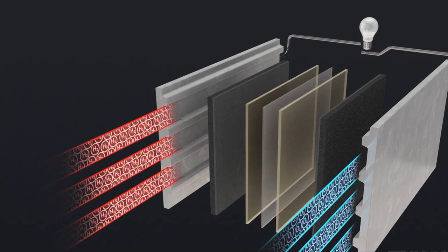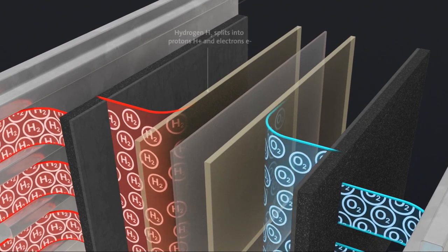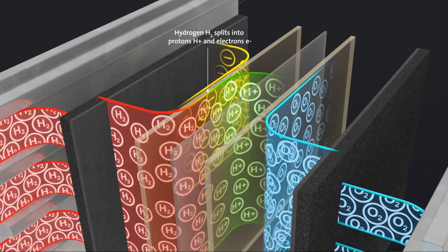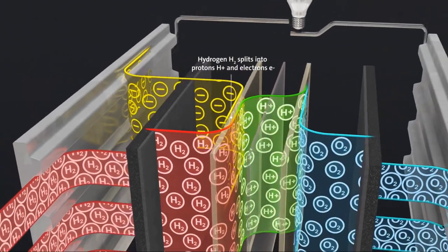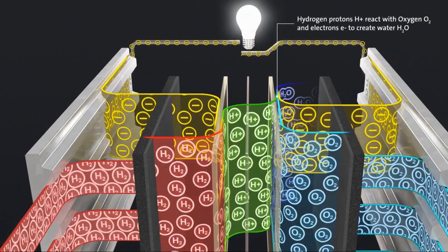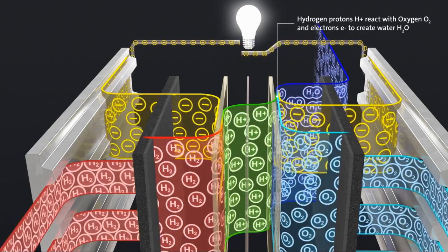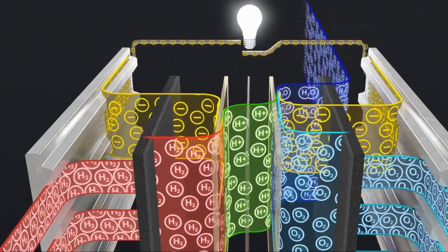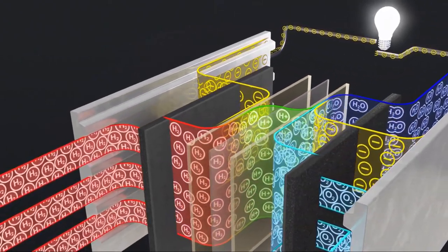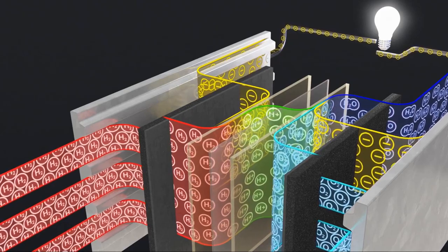A proton-permeable membrane separates the two electrodes. Hydrogen flows into one side and oxygen into the other. The dihydrogen gas is split into two electrons and two protons; the protons are channeled through the membrane into the other half, where oxygen flows. The electrons are diverted through an electric circuit to reach the oxygen on the other side, where there is a shortage of electrons. Water is then produced from the protons, electrons, and oxygen. The circuit's voltage is around 1.2 volts. Just as batteries can be connected in series to generate higher voltages, fuel cells can be stacked on top of each other, called a fuel cell stack.